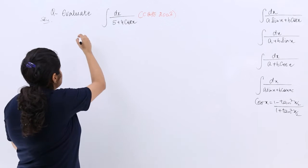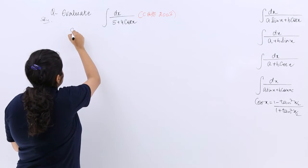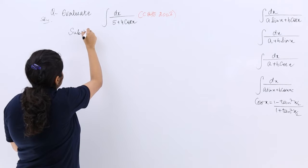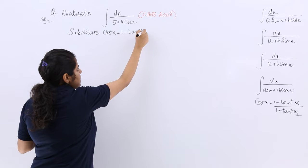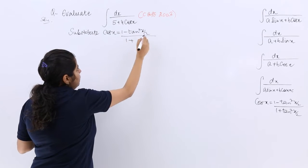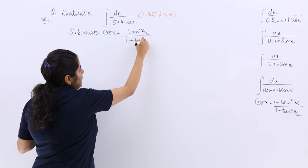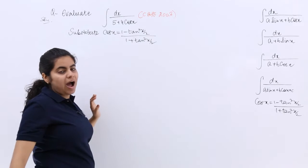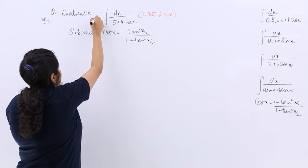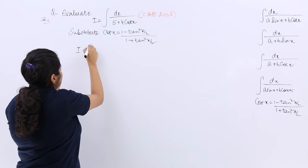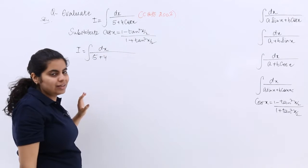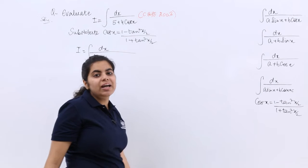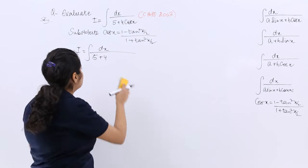So what I am going to write is, I am going to substitute cos(x) = (1 - tan²(x/2))/(1 + tan²(x/2)). After that, the question now changes. The integral becomes ∫ dx/(5 + 4[(1 - tan²(x/2))/(1 + tan²(x/2))]).